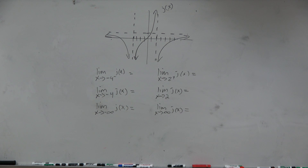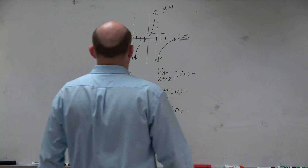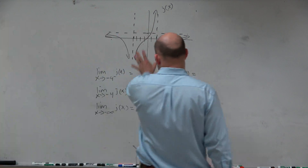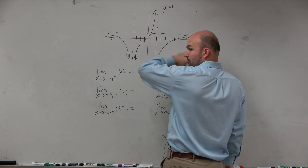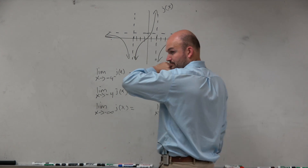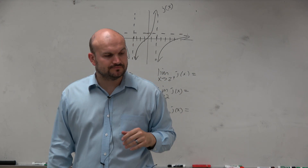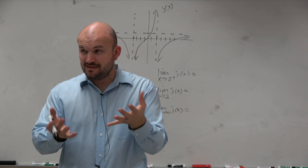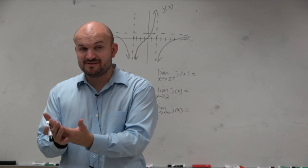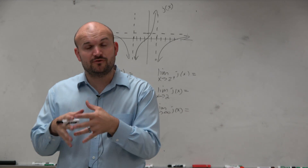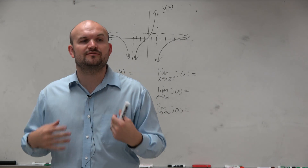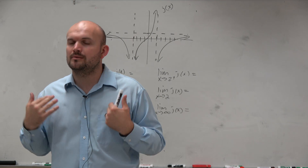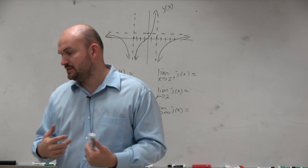I'm going to do this from a graph. You guys can see that we have some vertical asymptotes going on, and we have a horizontal asymptote. Now, again, when we're talking about limits, we're not looking for what the value is — we're just looking for what it is approaching.